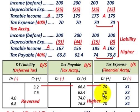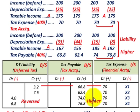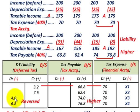For year two, tax expense debit is $70,000 versus tax payable credit of $62,400, so we need another credit of $7,600 to the deferred tax liability. In year three, you can see it switches — tax payable became higher than tax expense. Tax expense debit is $70,000 versus tax payable credit of $74,000, so we need a debit of $4,000 to the deferred tax liability.